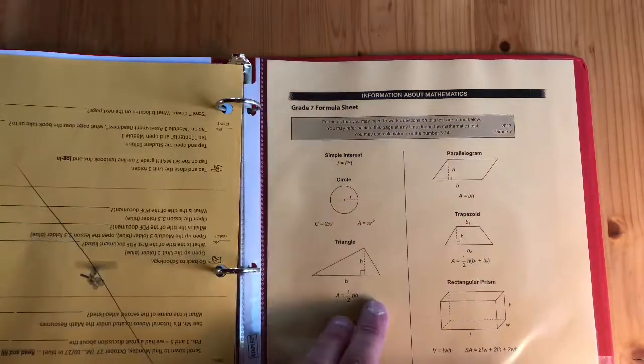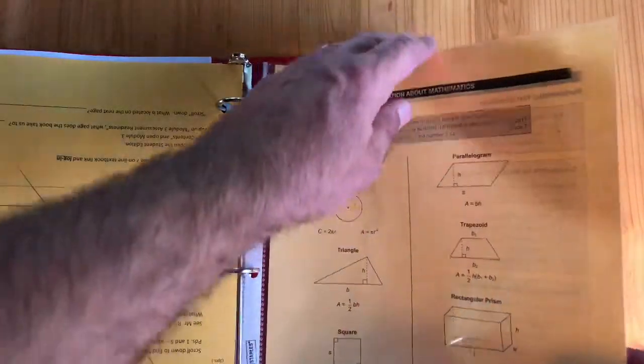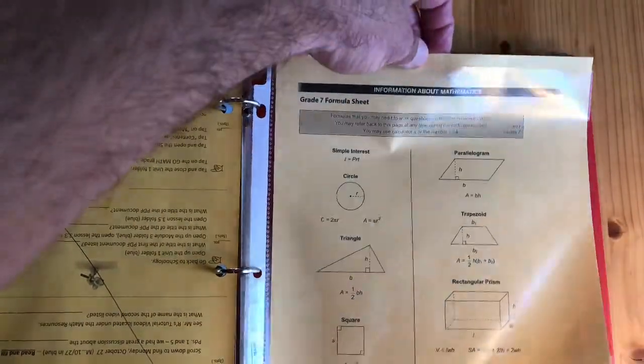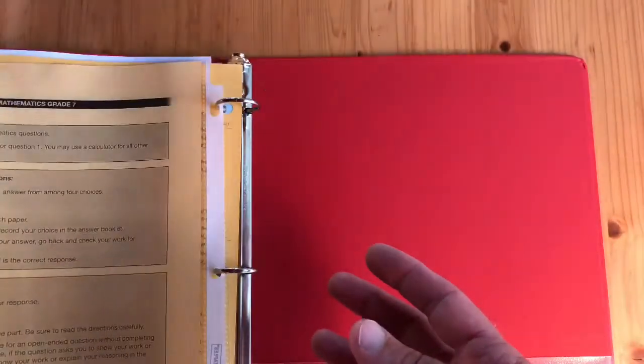The final section in a page protector will be your PSSA section. You're going to put your formula sheet inside the page protector and that's where we'll keep anything we do for PSSAs. And that is your binder organization.